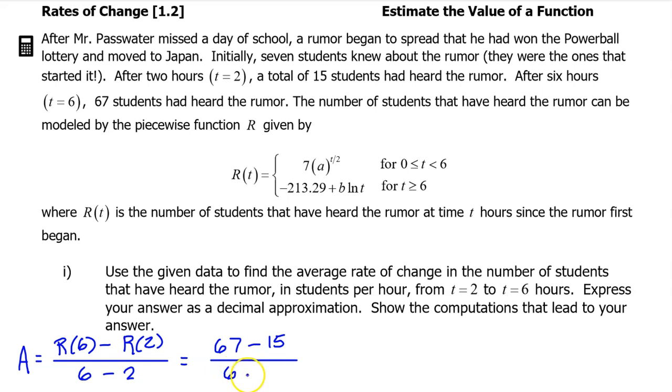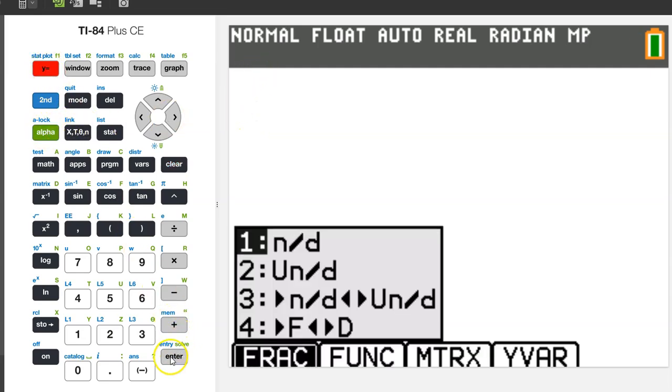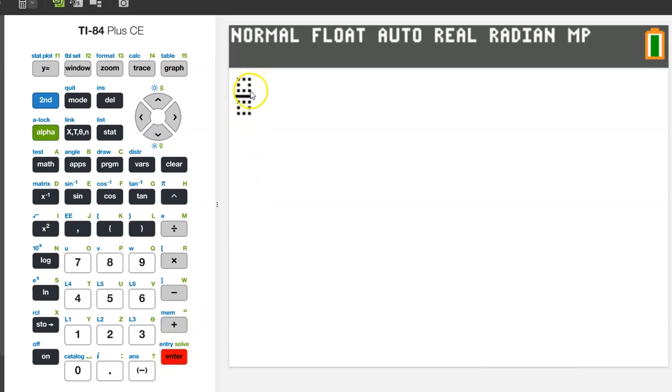Let's put this into the calculator to make a decimal approximation. Make sure you know how to make a vertical fraction on your calculator. You can either hit alpha Y equals enter, or if your calculator has the updated software, you can hit alpha X and that will do it more quickly. So, we need 67 minus 15 over 6 minus 2. Wow, that turns out to be exactly 13. I was expecting a decimal.